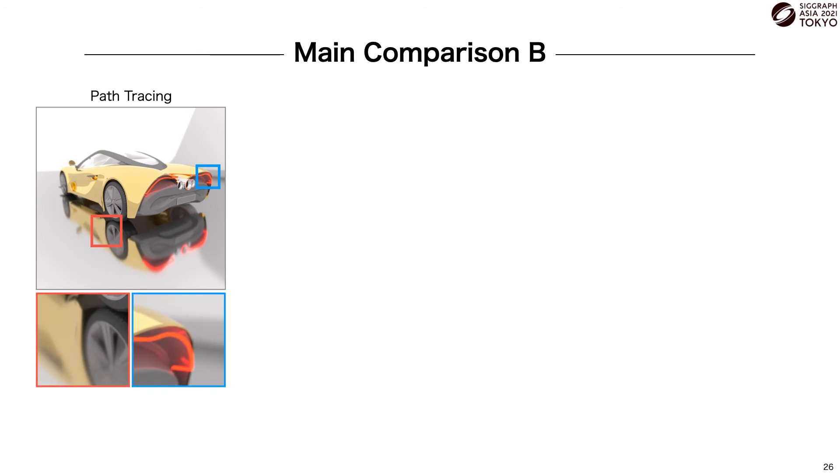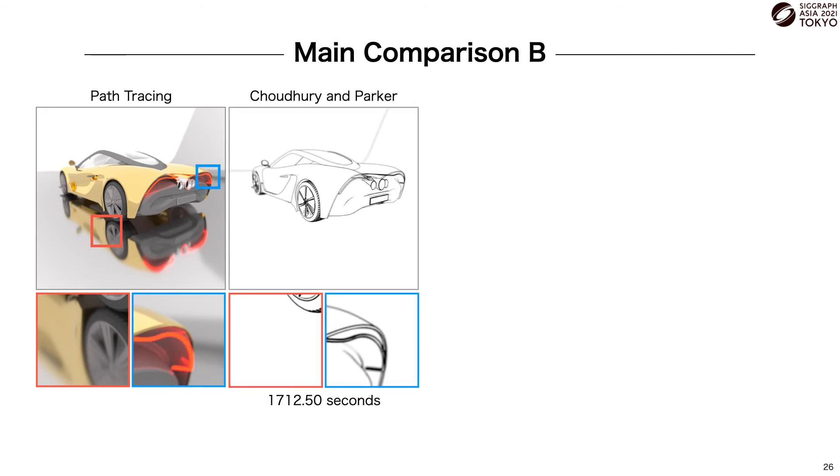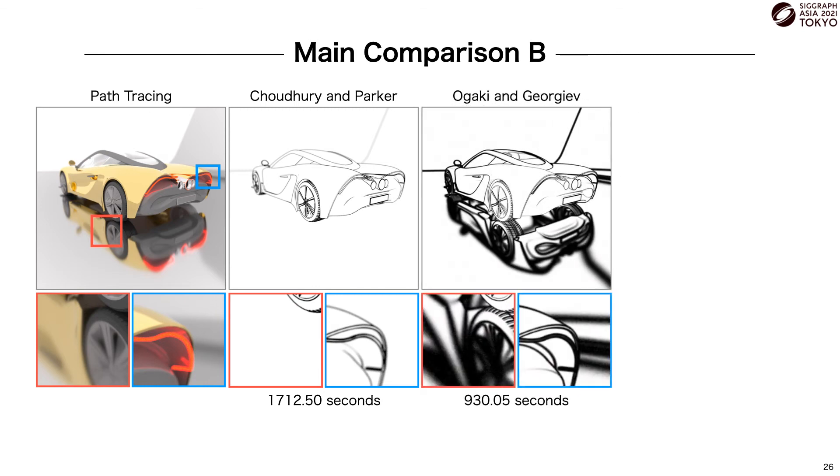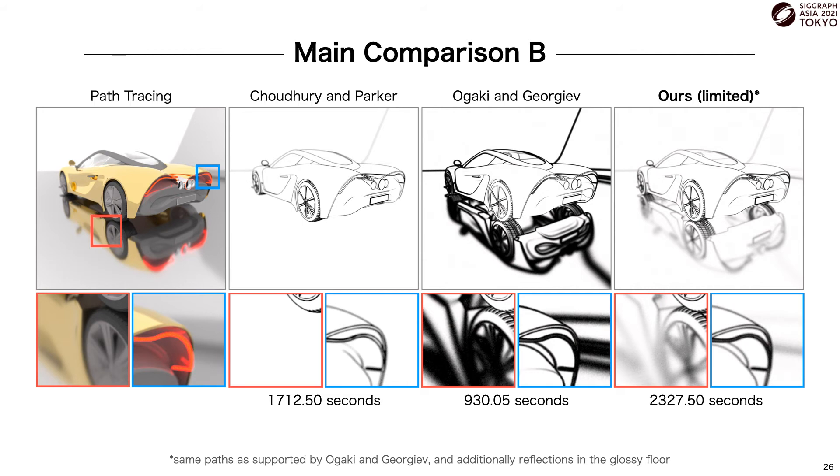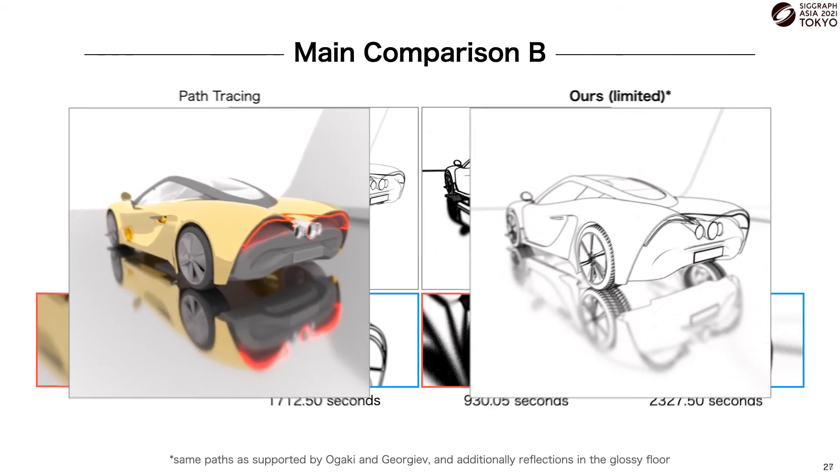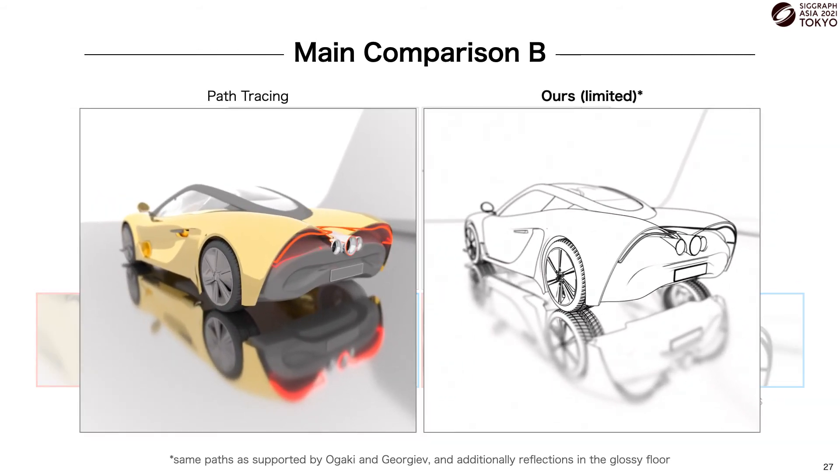This scene here is a bit more challenging for existing methods, with glossy reflections and depth of field. When rendering lines for this scene, the method of Chowdhury and Parker lacks the reflection in the floor but results in fairly convincing depth of field, seen in the blue inset. The method of Ogaki and Georgiev, on the other hand, due to its image space line test, results in strong artifacts for the glossy reflection and regions that are out of focus. Here, we've limited line testing of our method to paths supported by Ogaki and Georgiev, as well as reflections seen in the glossy floor. As our method leverages physically based rendering, it's able to naturally generate plausible lines for both the glossy reflections and the depth of field.